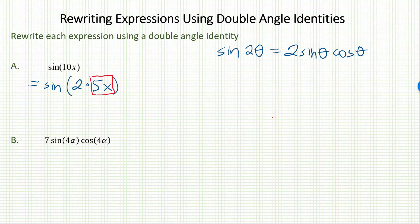In other words, if you want to say something about the sine of the double of an angle, you take the number 2, you multiply it by the sine of the original θ and then times the cosine of the original θ.